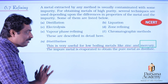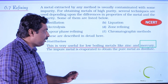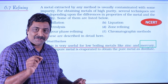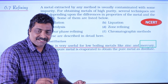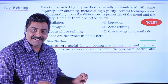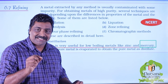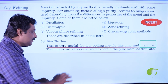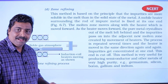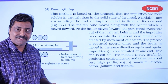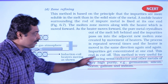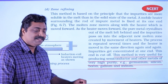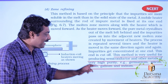Distillation is very useful for low boiling point metals. Zone refining, on the other hand, is very useful for producing semiconductors and other metals of very high purity, such as germanium, silicon, boron, gallium, and indium.